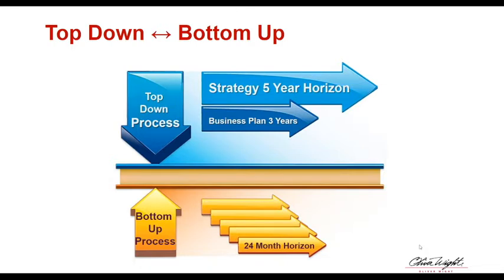The CEO of Oliver Wight said that in an ideal situation a company doesn't have a traditional budget — they don't lose time between September and November in negotiation. Instead they have their IBP rolling horizon of at least 24 months, and that is the actual plan. Some companies waste six months putting together their budget every single year, and by the time they get to January, February, or March it's no longer valid.